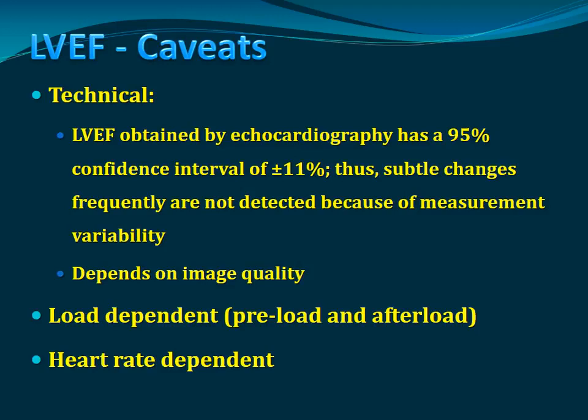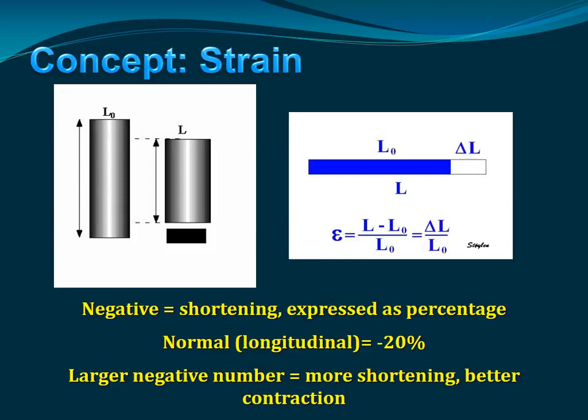The next thing is something that has been commercially available since 2005: myocardial mechanics imaging, and the concept is strain. Strain comes from physics — it measures deformation in one axis. We have an unstressed length of a material, and then we either lengthen or shorten it and measure the change by percentage. The normal number of shortening in the left ventricle is about 20% in systole, and in circumferential we have a little bit more, with a gradient from base to apex that increases.